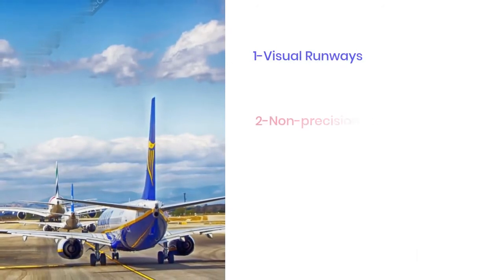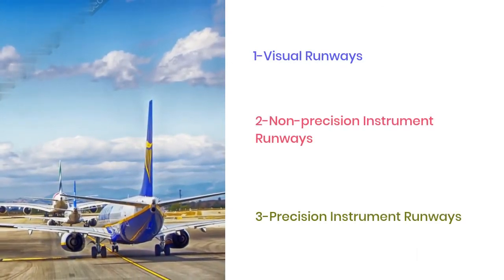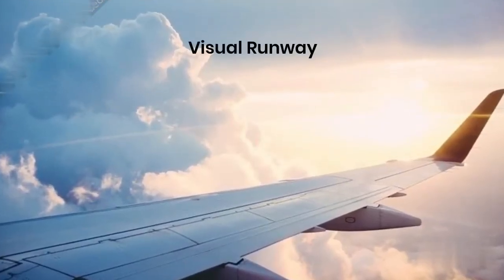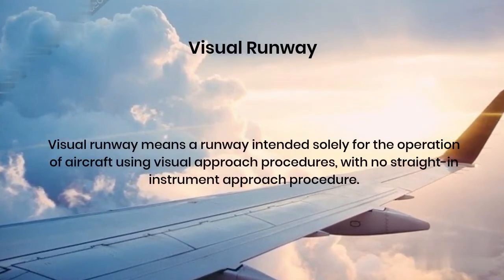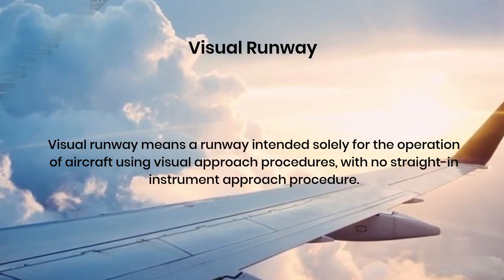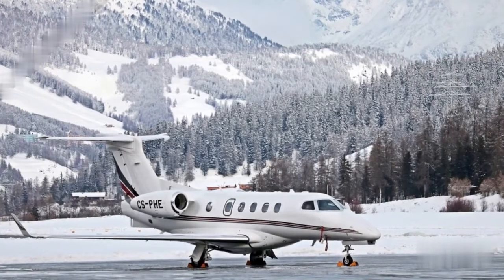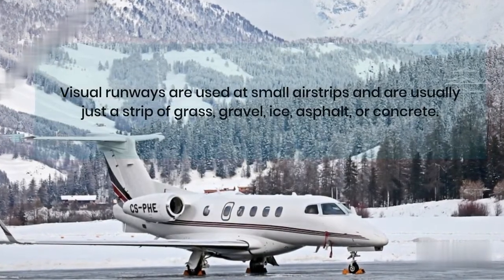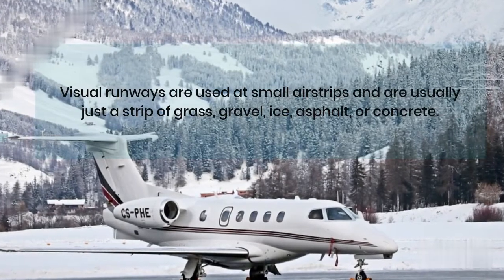Visual runways, non-precision instrument runways, and precision instrument runways. A visual runway is a runway intended solely for the operation of aircraft using visual approach procedures, with no straight-in instrument approach procedure. Visual runways are used at small airstrips and are usually just a strip of grass, gravel, ice, asphalt, or concrete.